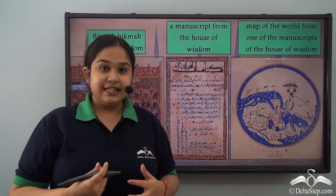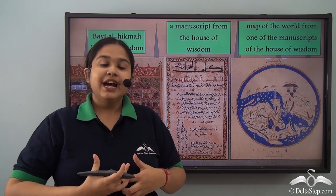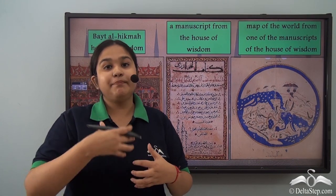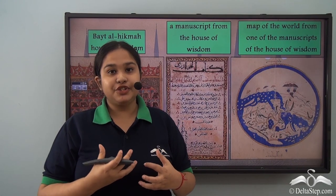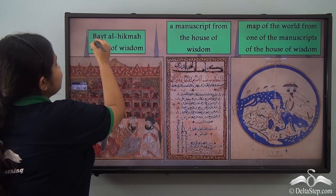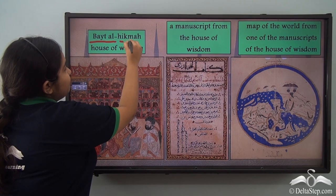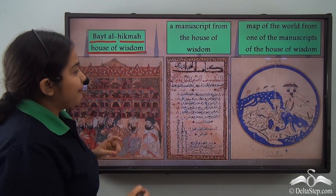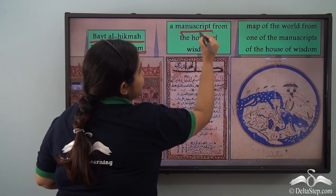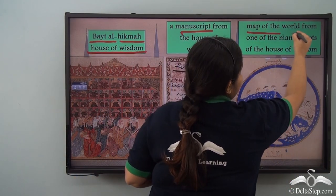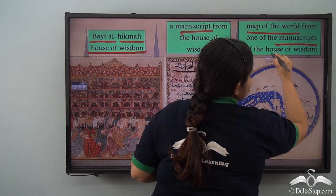In Harun al-Rashid's court, his ideas of encouragement and patronization of various aspects of culture led him to establish a library in Baghdad known as Bayt al-Hikma — the House of Wisdom. If you look at the screen you will see a manuscript from the House of Wisdom, and one of the maps that was drawn — the world map from the House of Wisdom.